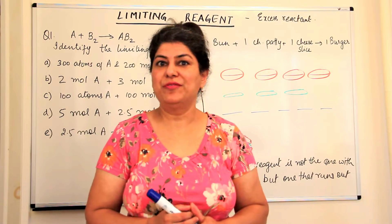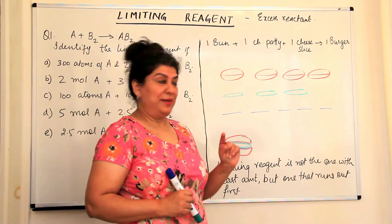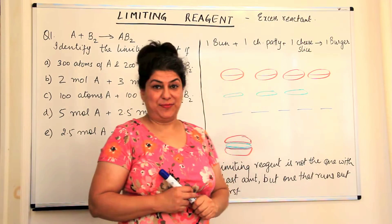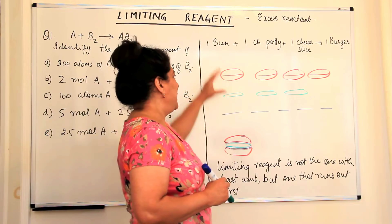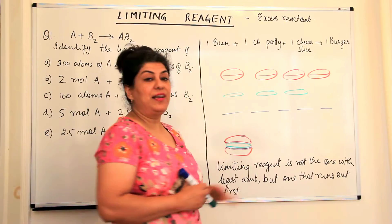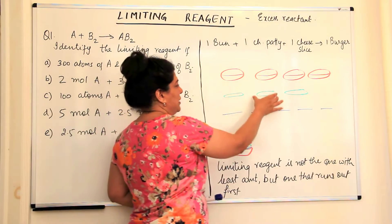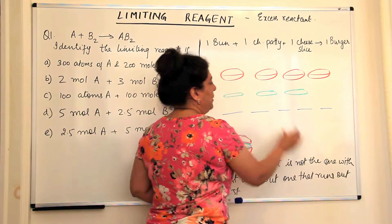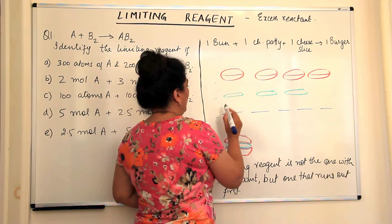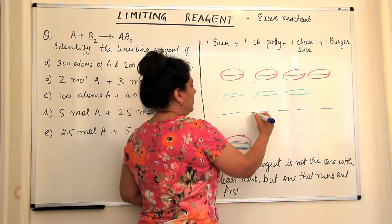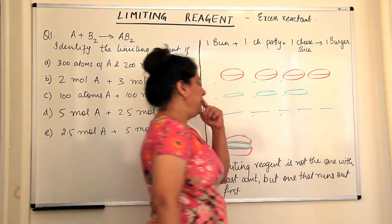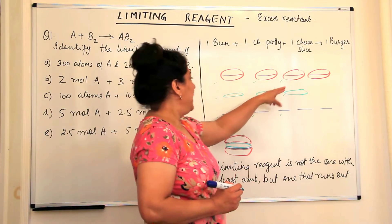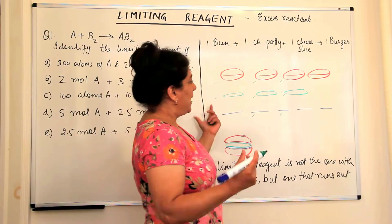For every burger, I need one bun, one chicken patty, and one cheese slice. So when I started making them: one bun, one patty, one cheese — first burger done. Second burger: one, one, one. Third burger: one, one, one. Now, can I make more burgers? I could make only three burgers. Why? Because I had three chicken patties and I ran out of chicken patties. If I ran out of chicken patties, I couldn't make any more burgers.